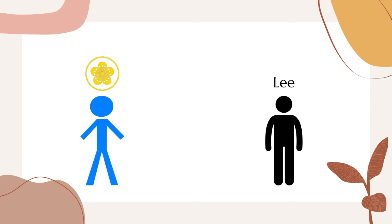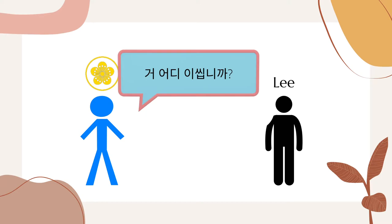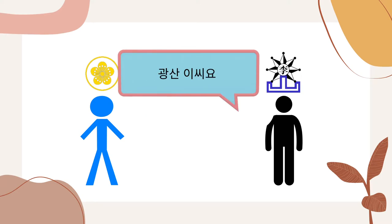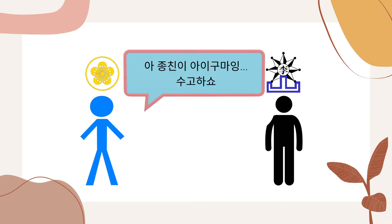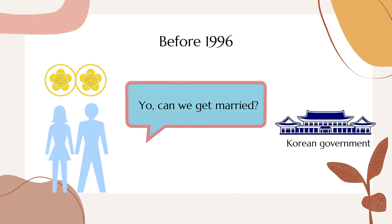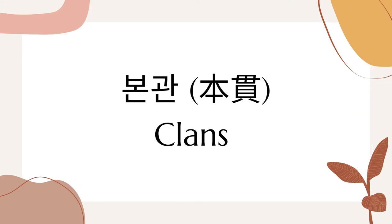So if someone from the Jeonju Lee clan meets another person surnamed Lee, they might ask, what clan are you from? And if they reply, I'm from the Gwangsan Lee clan, they know they're not related because although their surnames are the same, they come from different clans with different ancestors. And because everyone in the same clan technically belongs to the same family, until 1996 it was illegal in South Korea for someone to marry within their own clan. So the concept of knowing one's clan and asking about other people's clans was a necessity for Koreans.